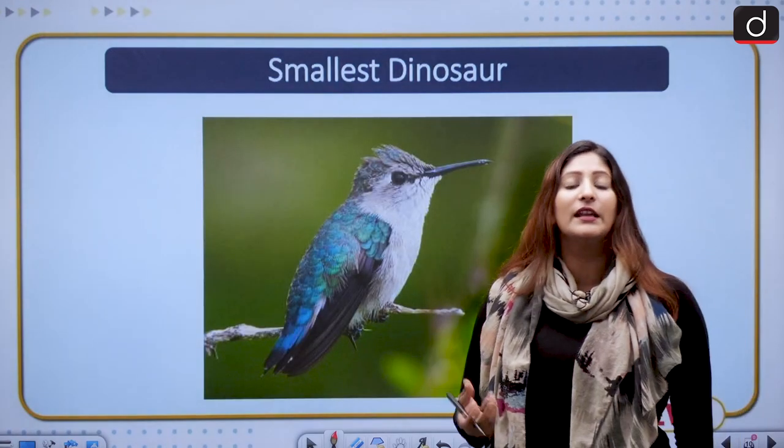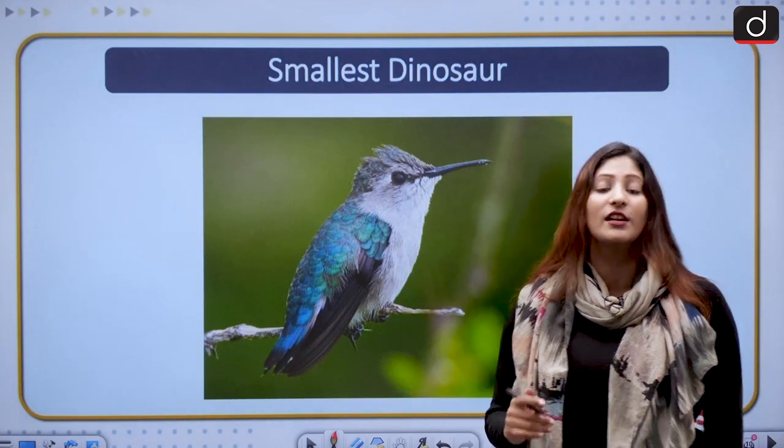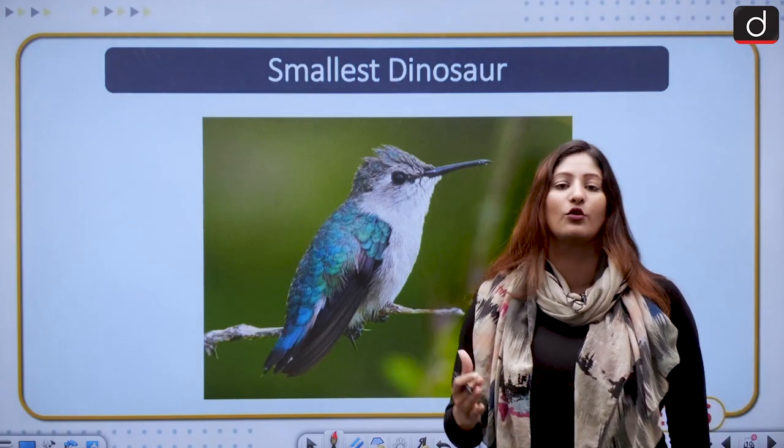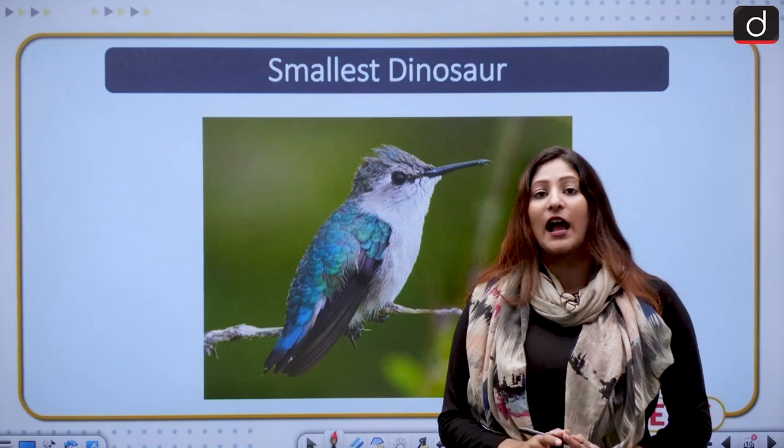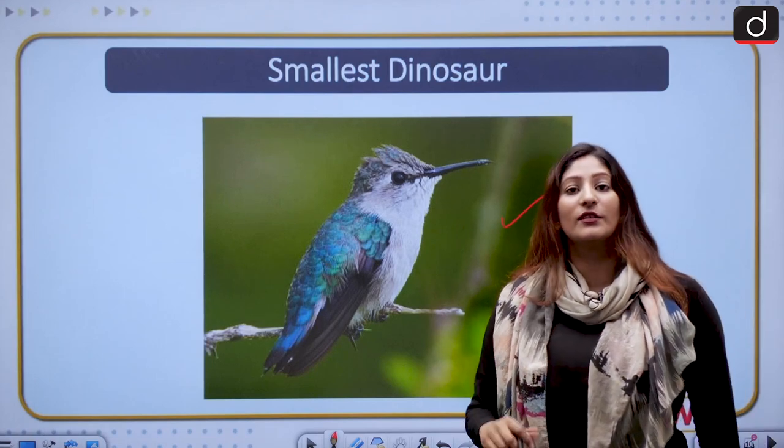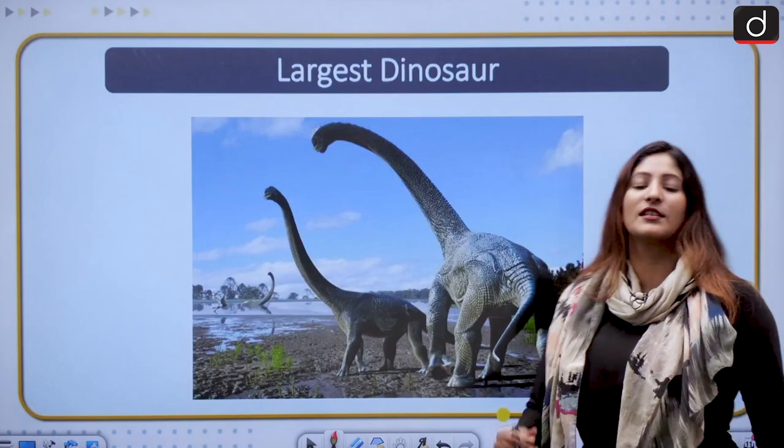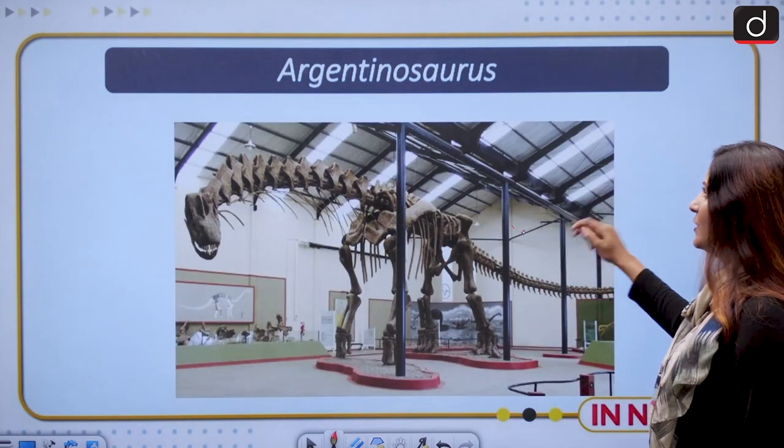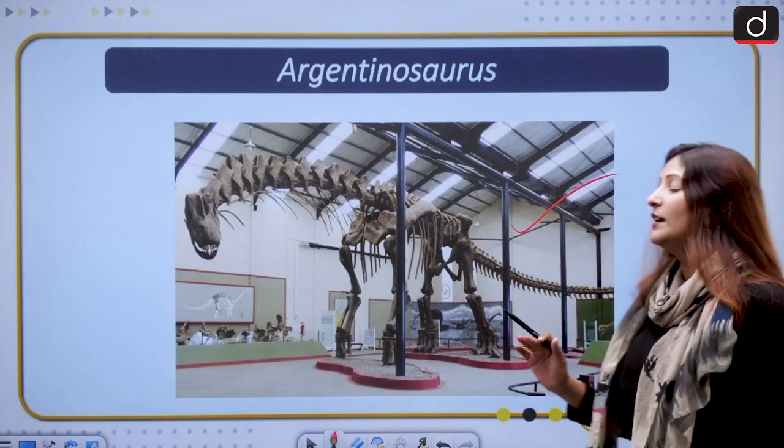To know more about dinosaurs: we are talking about non-avian dinosaurs that disappeared. If we talk about the avian part, right now we have the smallest dinosaur, the bee hummingbird. The largest dinosaur was the Titanosaurus—these are herbivores. The largest ever discovered fossil of any non-avian dinosaur is the Argentinosaurus.